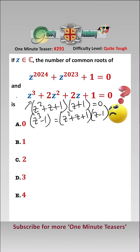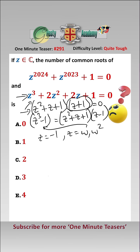Therefore, we can say that the three roots are z equals minus 1 from the first factor, and also z equals omega and omega squared from the second, omega and omega squared being two of the three cube roots of unity. Therefore we also know that omega cubed is equal to 1.